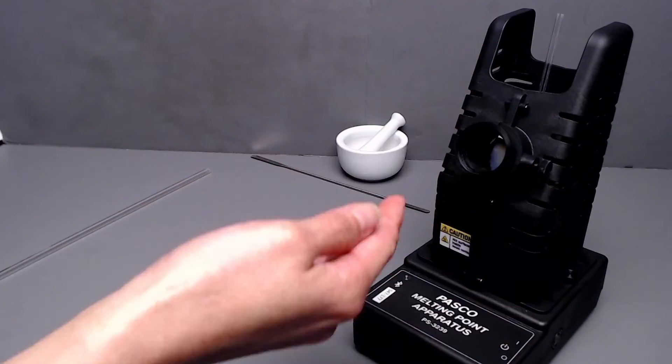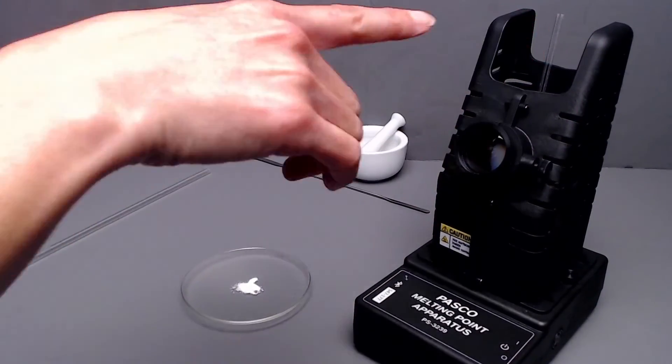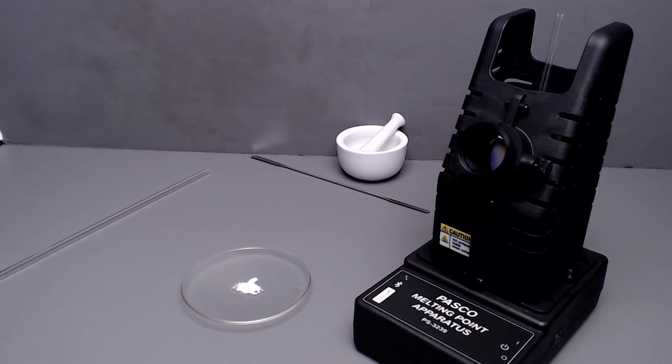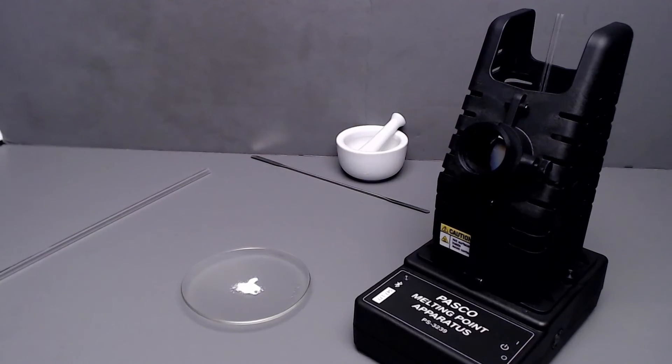You can either use the capillary tube open. The only time you might worry about sealing that capillary tube is if you have a sample that sublimes easily before the melting point. If that happens, you can always take a Bunsen burner and seal it closed. Otherwise, you are ready to use the apparatus with open tubes.